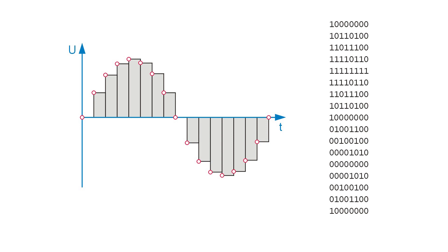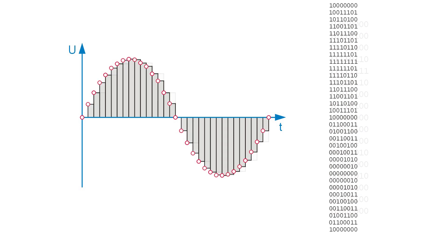The quality can be improved if the signal is sampled at shorter intervals and reconstructed again. This means that at the same time, more data must be transferred.